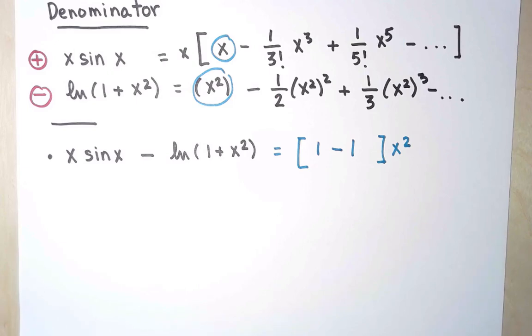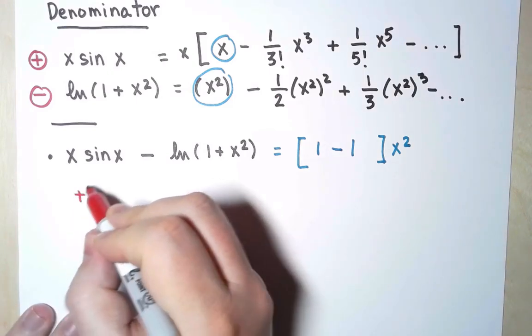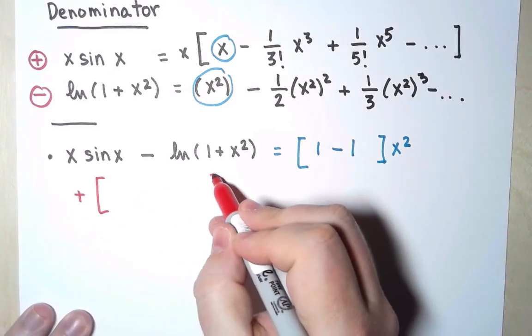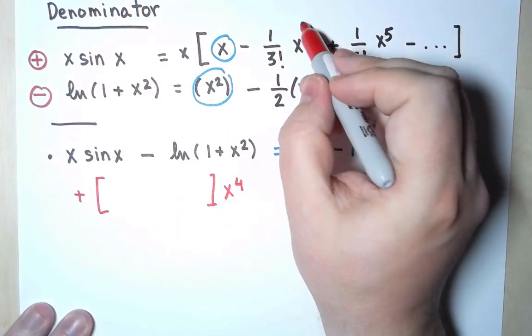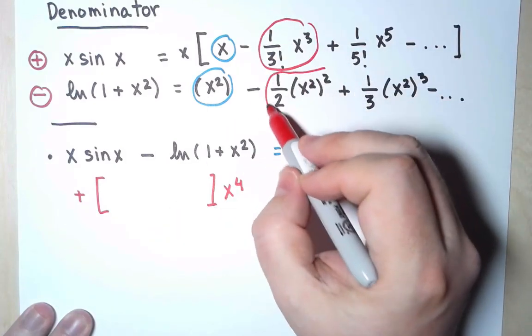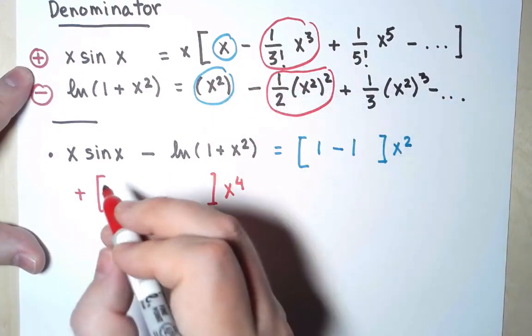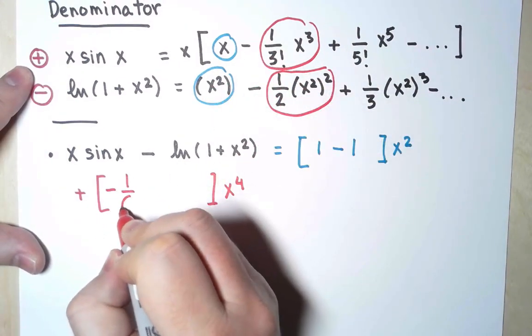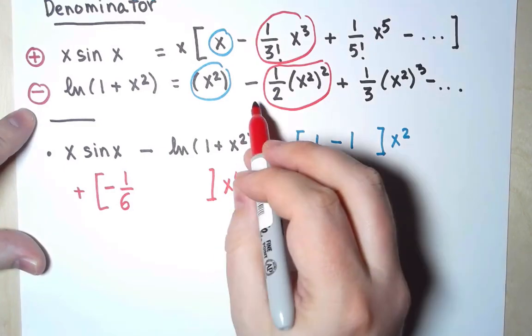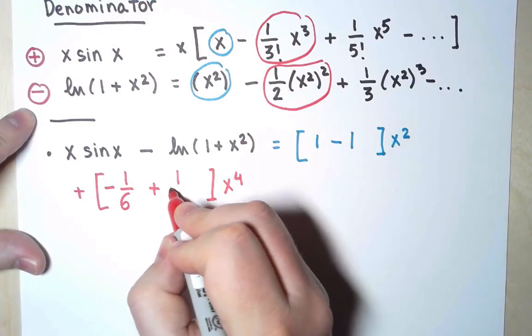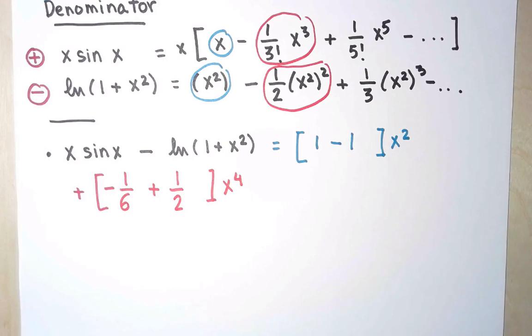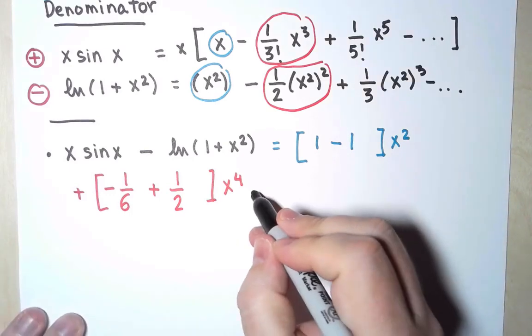Well, next, I'm going to have, in this case, terms with x⁴. I have this one, and this one. And the coefficient now is -1/3!, which is -1/6, minus minus, plus 1/2. Alright, that's it. This term doesn't vanish. It's not 0, so I can stop. I don't need anything else.